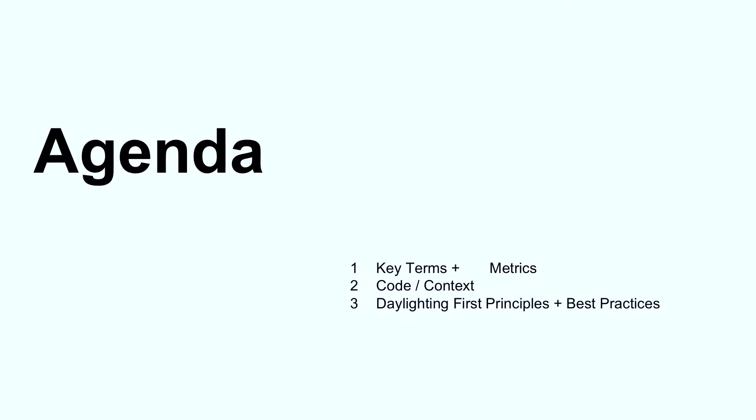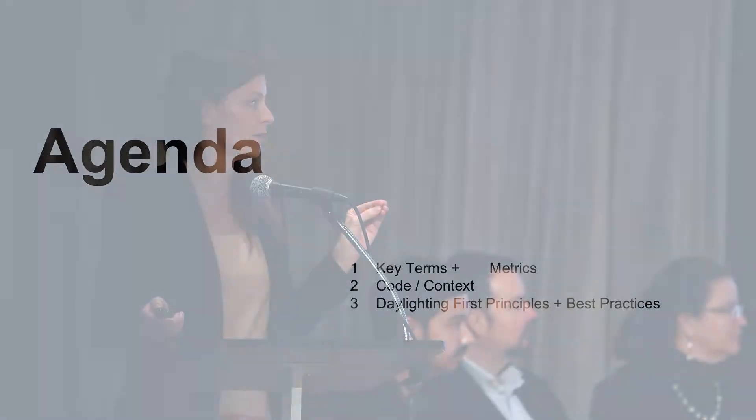Hi everyone. I'm going to give a quick overview so that we're all on the same page, because light happens to be this incredibly specific, detailed industry where we like to use a lot of very technical language. There are a lot of very technical, talented people here, but I want to make sure that we're all using the same words before we really start any discussions. So key terms and metrics — I'm going to jump into a little bit of the code, and then talk about daylighting best practices and the first principles of design.